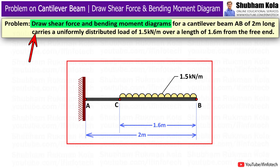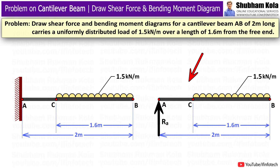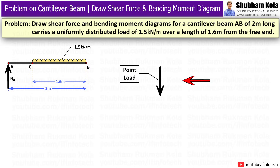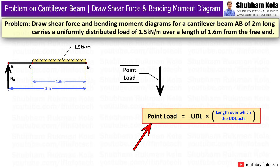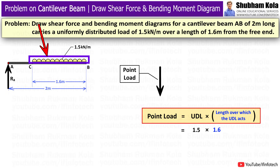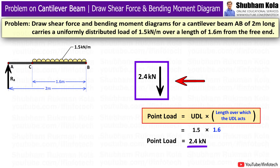For this setup, we have to draw the shear force and bending moment diagram. First, I will draw the free body diagram for this beam section. We need to convert this UDL into a point load by multiplying the UDL value of 1.5 kN per meter with the length over which it acts, that is 1.6 meters, giving a point load of 2.4 kN.